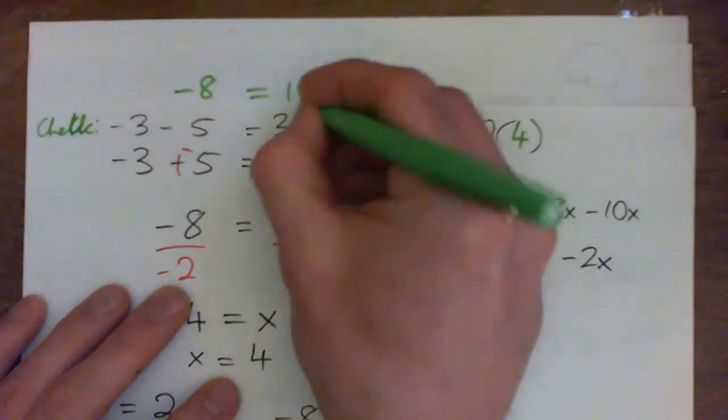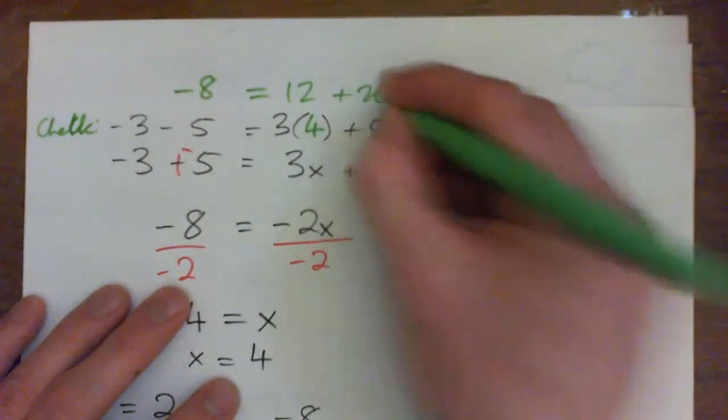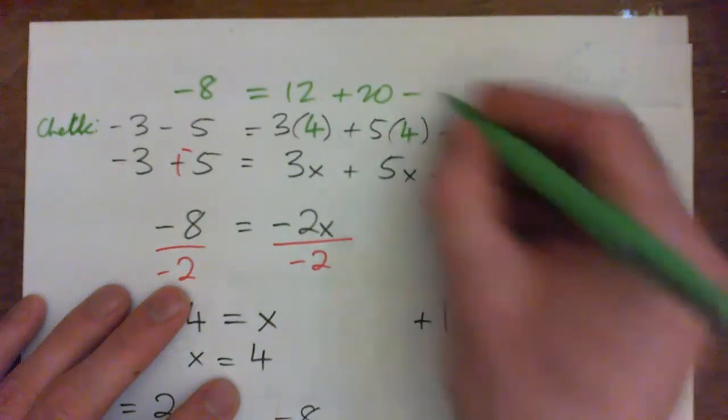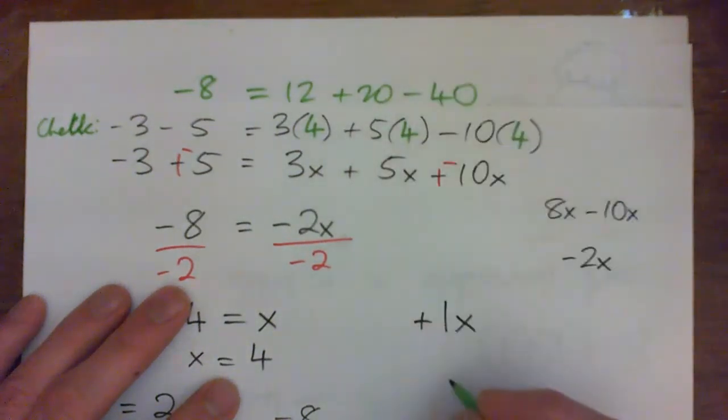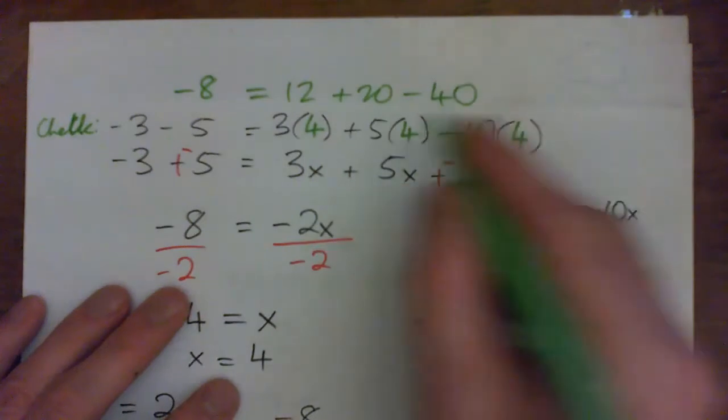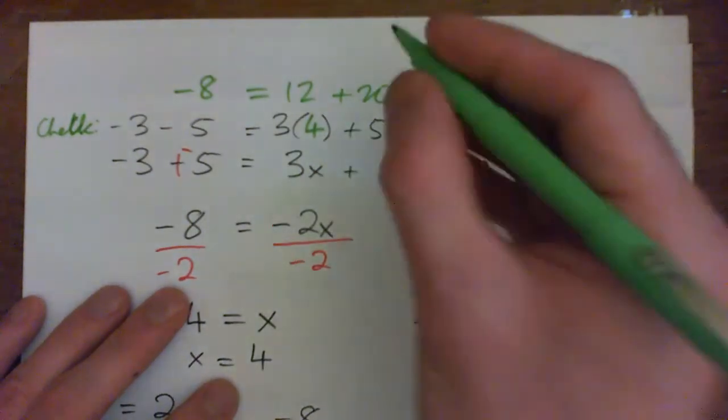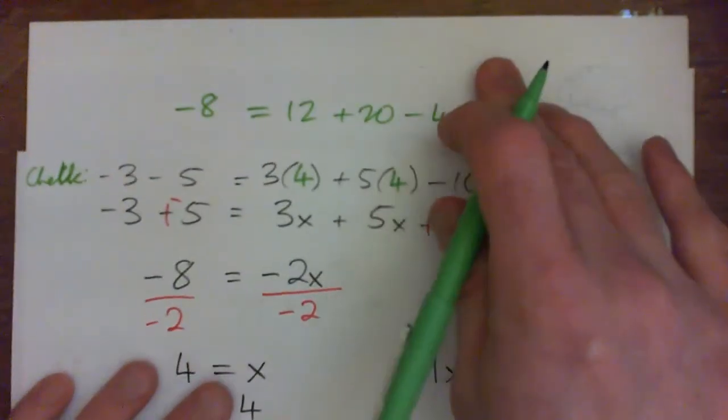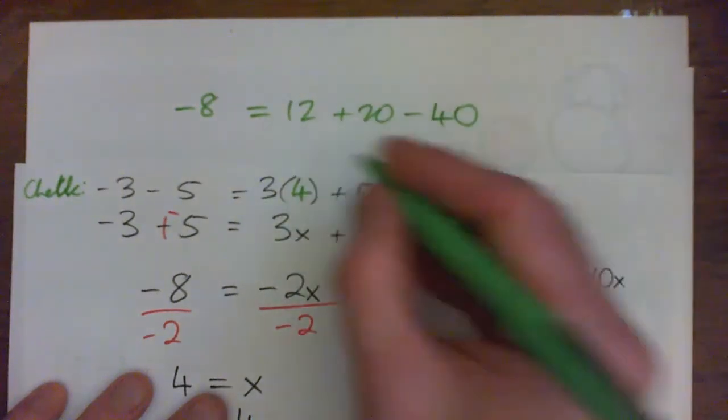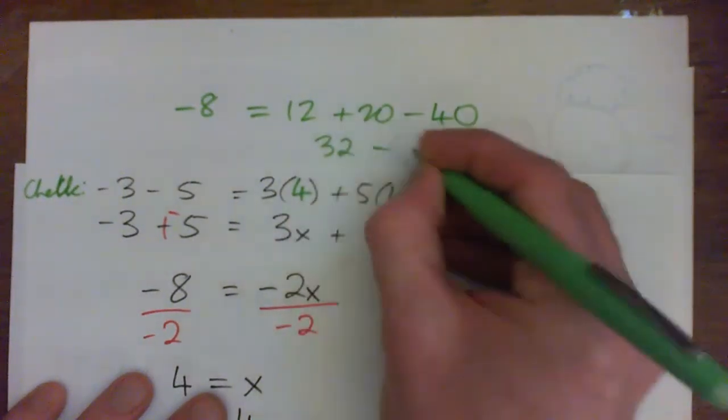And here we have 3 times 4 is 12, plus 5 times 4 is 20, minus 10 times 4 is negative 40. So on the right, we have 12 and 20 is 32 minus 40.